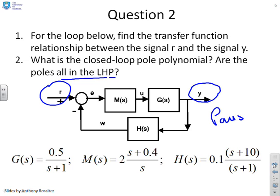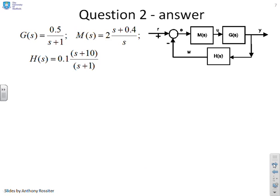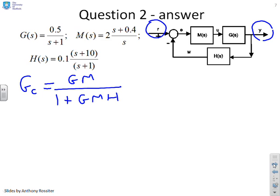Now's the time to pause because I'm going to move to the solution. We've got R here and Y here. If I write down by inspection using forward path over 1 plus return path, the forward path is GM and the return path is everything in the loop, so I get GMH.